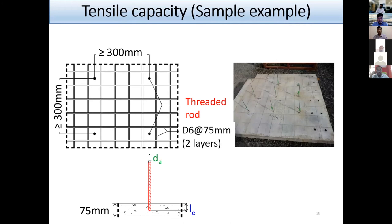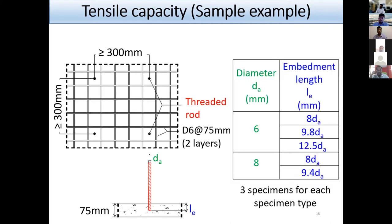I'm going to show an example of designing a post-installed bonded anchor in an RC slab with low-strength concrete, based on a scale test performed in Japan. A half-scaled RC slab of 75 mm thickness was used, made with only 11.7 MPa concrete. The anchors were placed in the center of the area between the slab reinforcement, and the parameters for specimen selection were anchor diameter and effective embedment length.